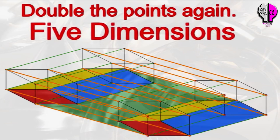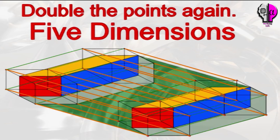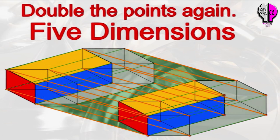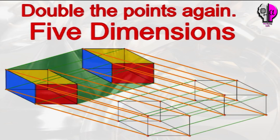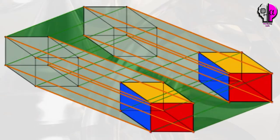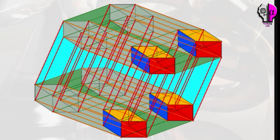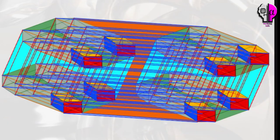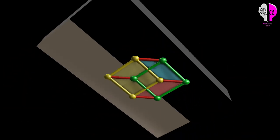Now we have five dimensions. As we continue to double the points, we can add as many dimensions as we want. Now we have six dimensions, and finally seven dimensions. In this way we can draw as many dimensions as we want by doubling the points as shown in this video.